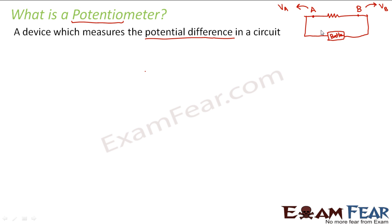So the question is: why do we need a specific device like this to measure potential difference when we already have a voltmeter? We all would have seen a voltmeter in our physics labs. So when we already have a voltmeter, why do we need another device called a potentiometer? That is a very important question. We will look into what a voltmeter cannot do but a potentiometer can do.